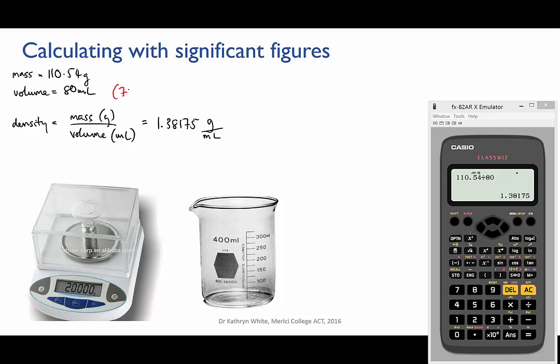The true volume of the sample could be anywhere between 75 and 84 mils, and that means that the true value of the density could be anywhere between, you can calculate this for yourself, 1.32 or 1.47.